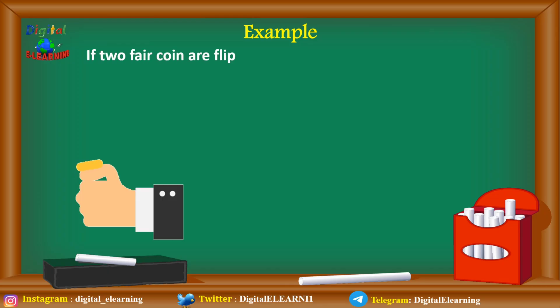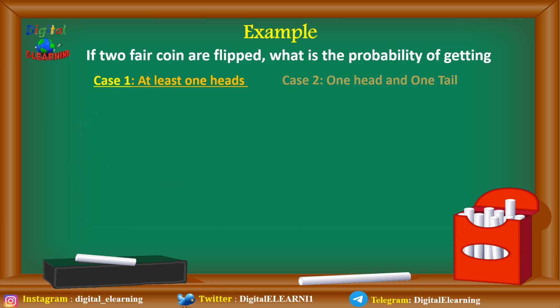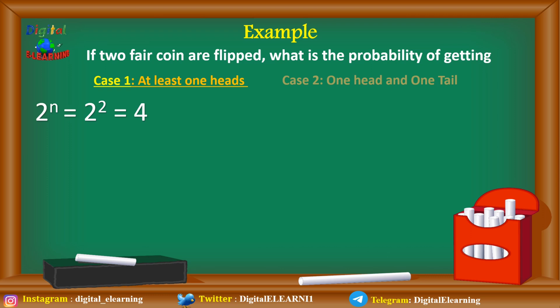If two fair coins are flipped, what is the probability of getting, first case, at least one head, and second case, one head and one tail? For the first case, we apply the formula 2^n. With n = 2 fair coins, 2^2 = 4, so our sample space is 4, consisting of HT, HH, TT, and TH.